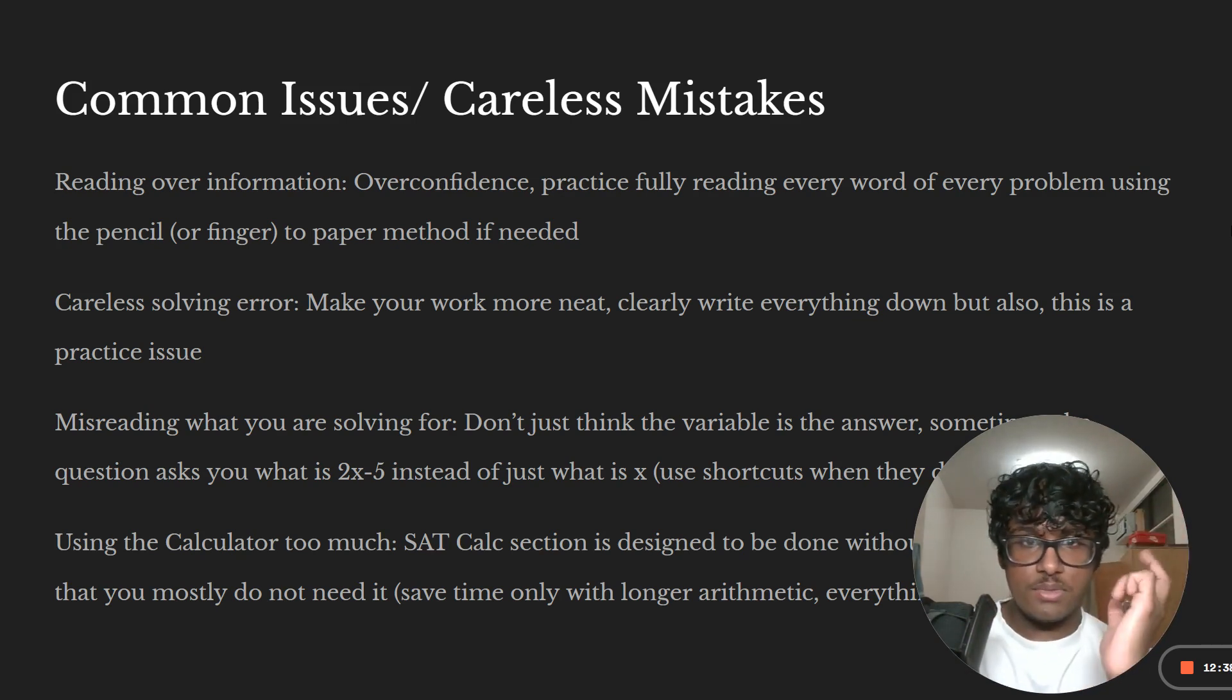But also people don't use the shortcut. There are always shortcuts that are going to be there every time it asks you for 2X minus 5, instead of the variable itself, there's always going to be some easier way to solve it. That doesn't involve you solving directly for the variable, but just canceling terms and being able to solve for that group of things. 2X minus 5, instead of just the X and then plugging it back in and solving for 2X minus 5.